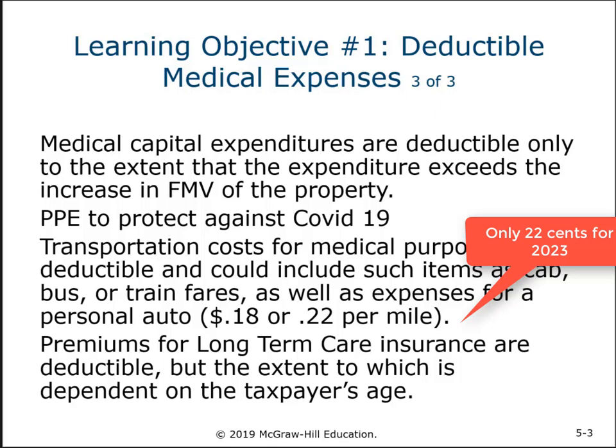Transportation costs to go to and from the doctor, hospital, and dentist could be deductible. If you drive your own vehicle, you can keep track of gas and related costs, or just track the miles and deduct at $0.18 or $0.22 per mile. The rate changed during 2022 — the first half was $0.18 per mile and the second half was $0.22 per mile.